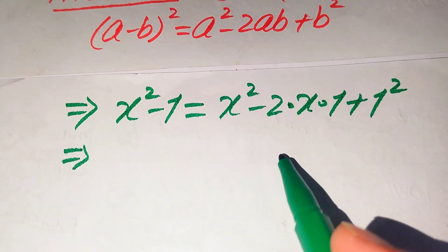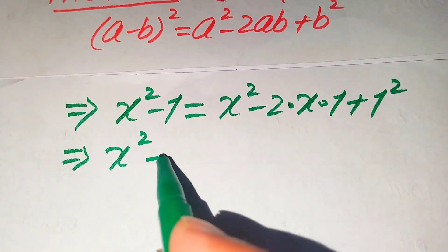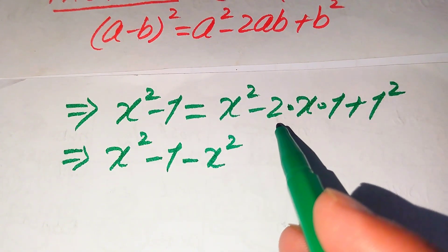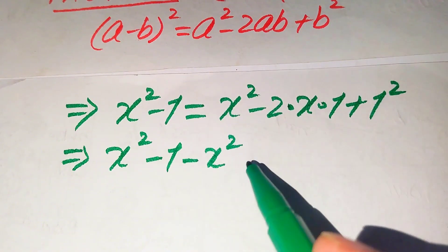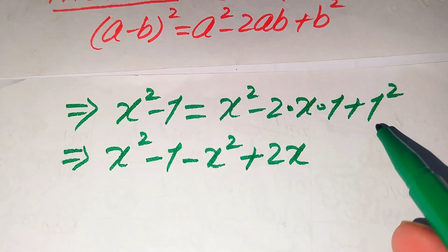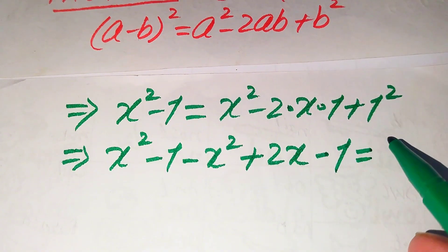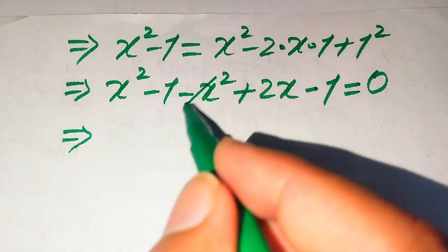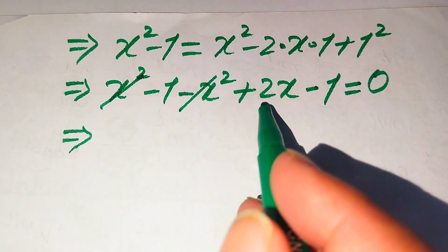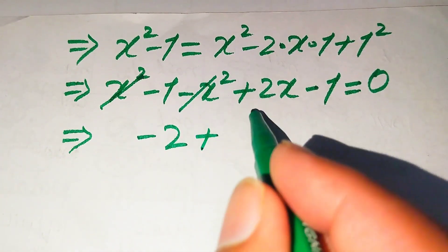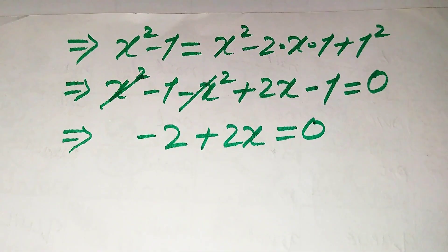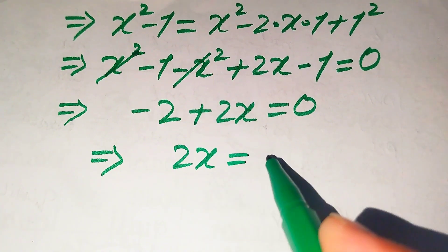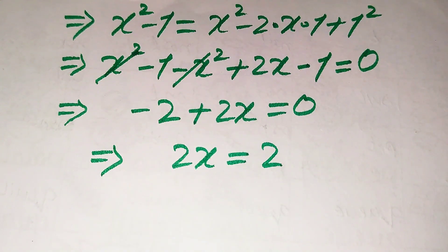We move all terms from the right hand side to the left hand side: x² - 1 - x² + 2x - 1² equals 0. Simplifying, the x² terms cancel, -1 - 1 becomes -2, leaving 2x - 2 equals 0. Then we move -2 to the right hand side: 2x equals 2.